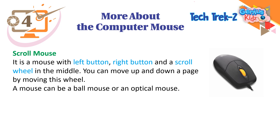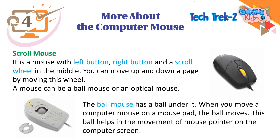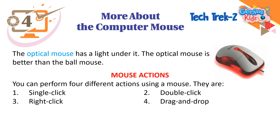A mouse can be a ball mouse or an optical mouse. The ball mouse has a ball under it. When you move a computer mouse on a mouse pad, the ball moves, and this ball helps in the movement of the mouse pointer on the computer screen. The optical mouse has a light under it. The optical mouse is better than the ball mouse.